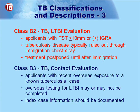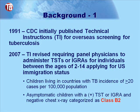This will be the topic of our discussion. Class B-3 contact evaluation applies to applicants with documented recent exposure overseas to a known TB case. In 1991, CDC initially published the Technical Instructions for overseas screening for TB, and in 2007 they were revised to require panel physicians overseas to administer TSTs or IGRAs to children aged 2 to 14 applying for U.S. immigration who were living in countries with TB incidence equal to or greater than 20 cases per 100,000 population — compared to the U.S. 2011 rate of 3.4. These are asymptomatic children with a positive TST or IGRA and negative films, characterized as Class B-2.